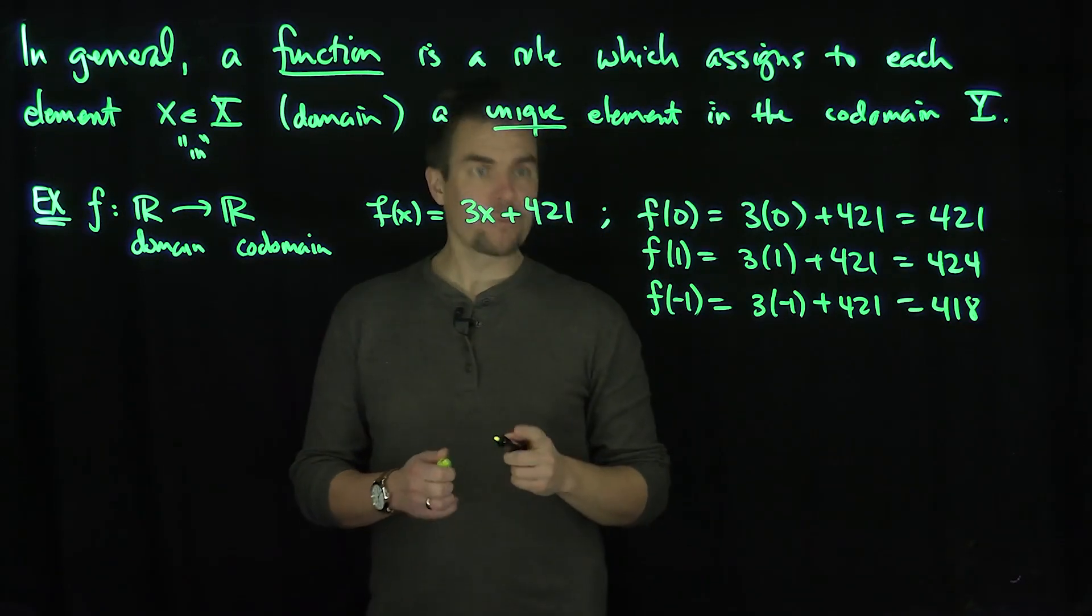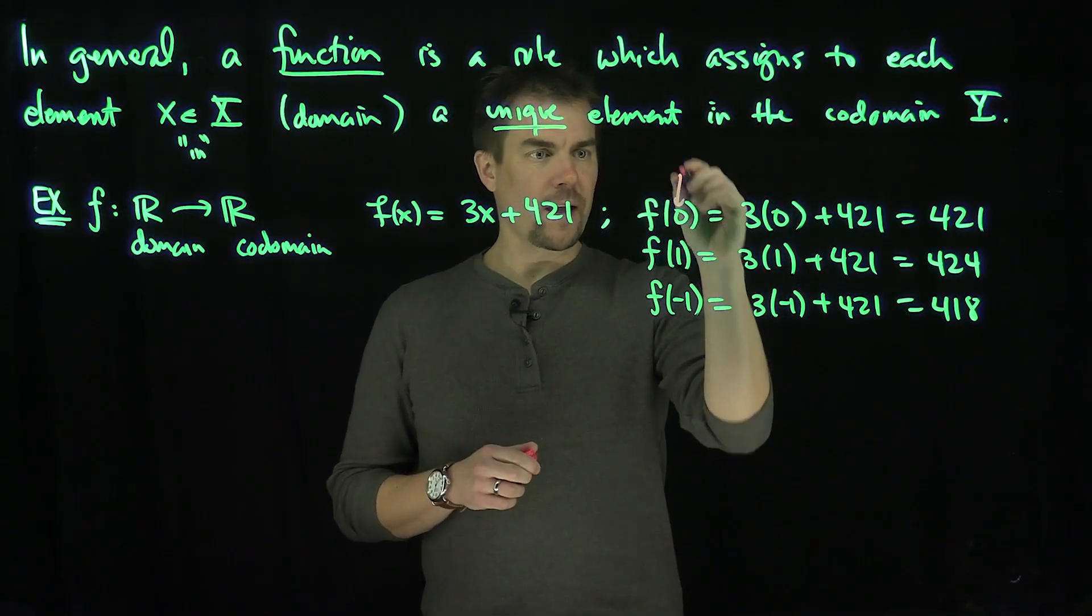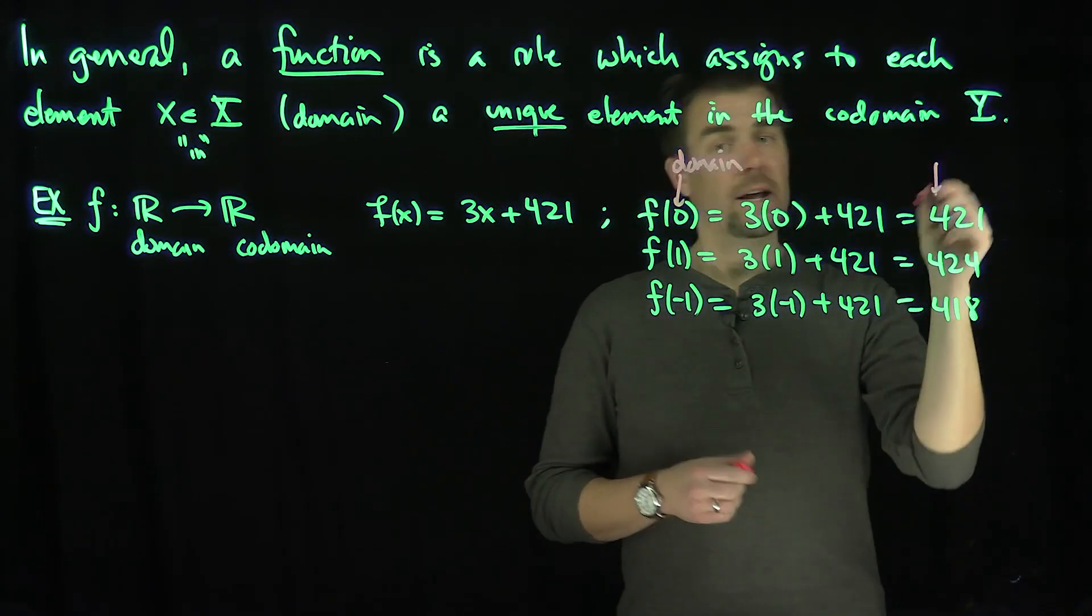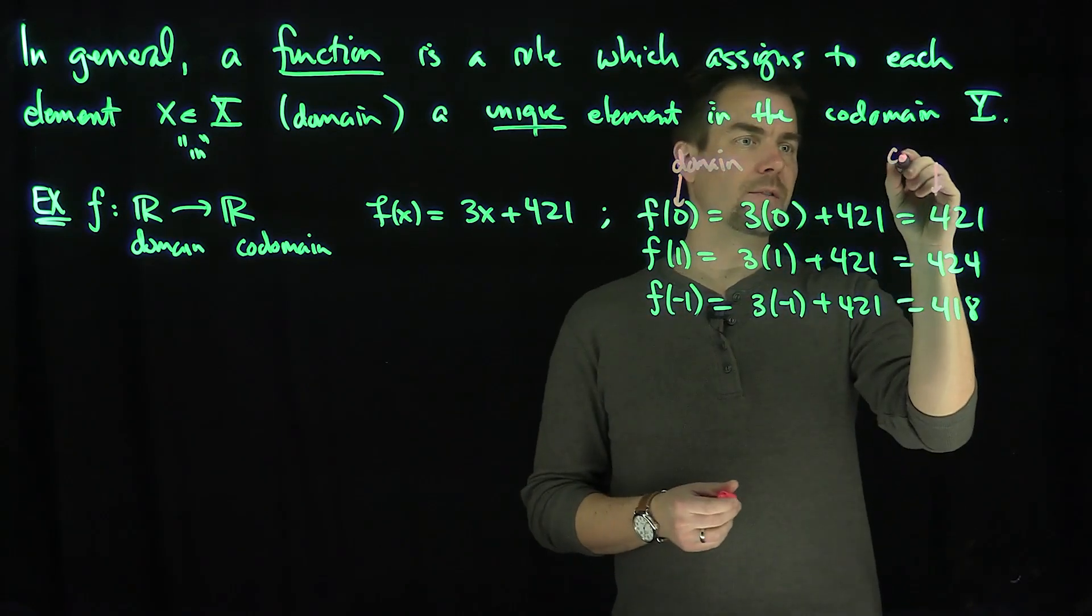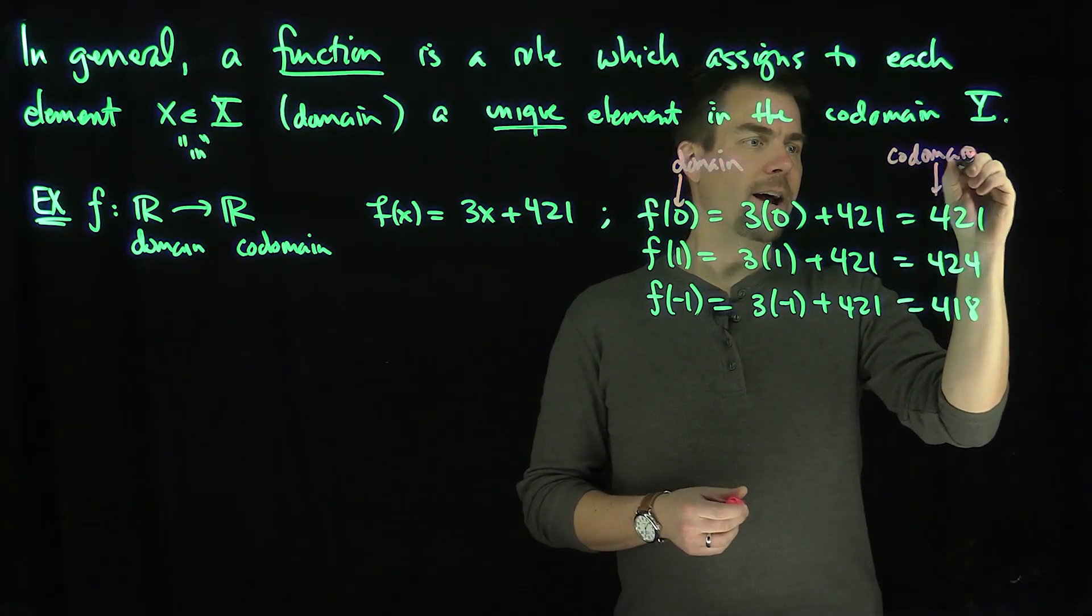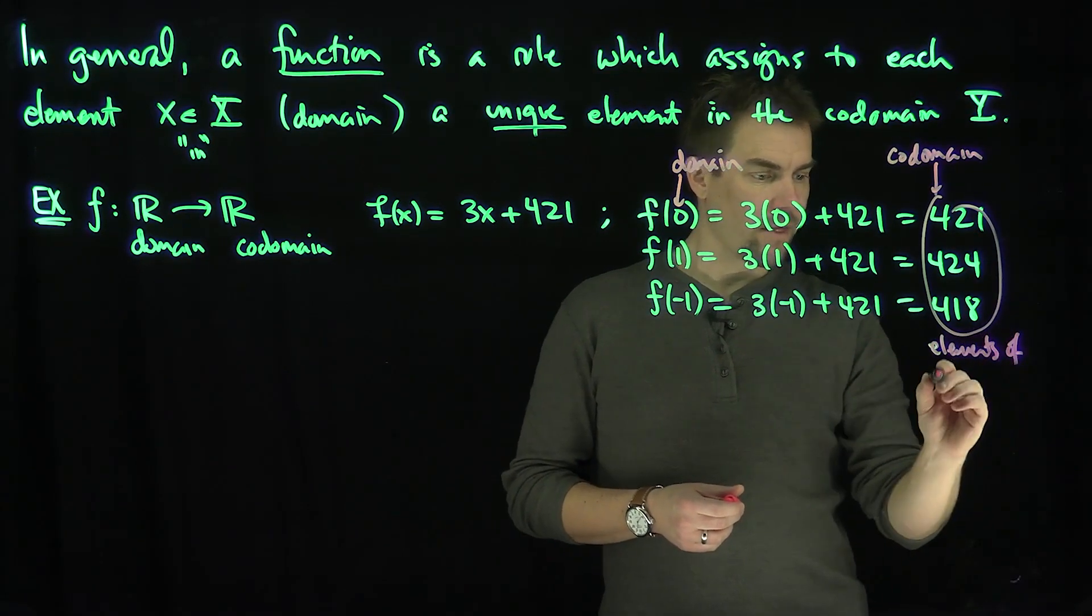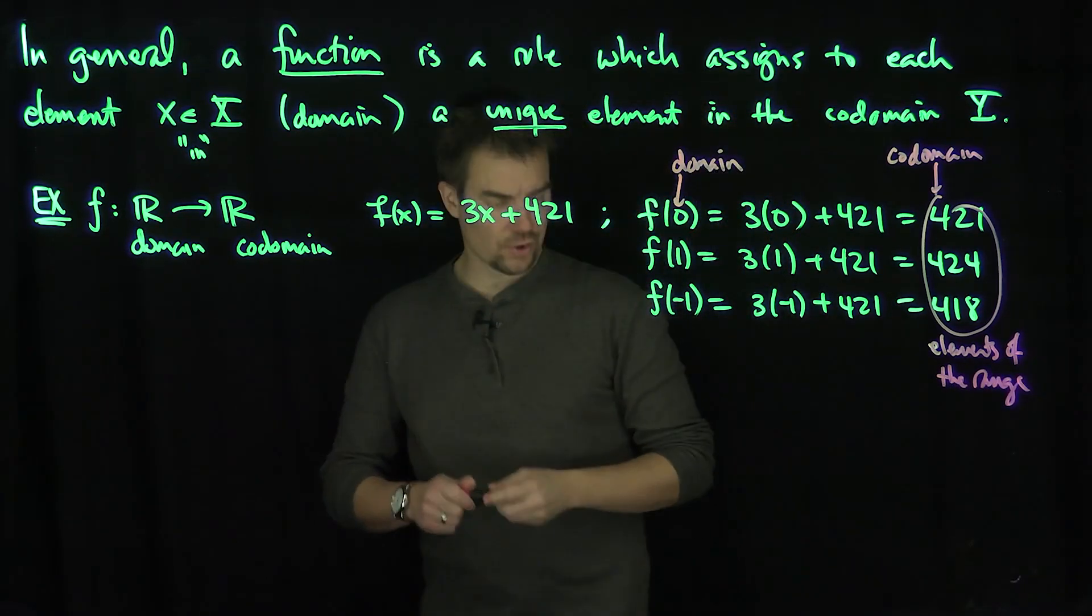So we see over here that to every value x, for every real value x in my domain, these are elements of the domain, I output a number, these will be elements of the range, but in principle they just live in the codomain. In fact, these points are going to be elements of the range of the function. So that's an example of a function.